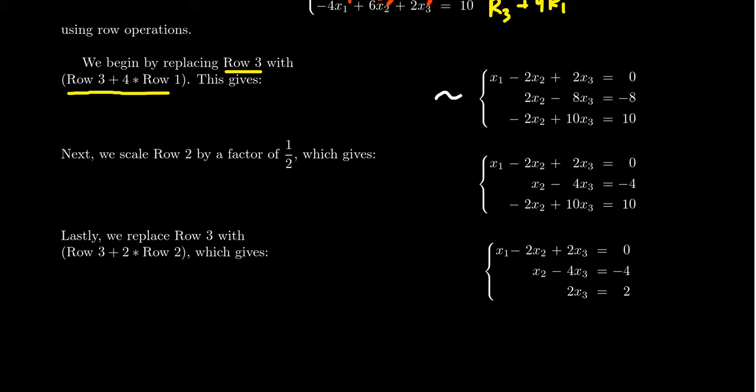Next, what we're going to do is we're going to take row 2, and we're going to multiply it by a factor of 1 half. We're using the scaling operation. So, I'm going to take row 2 and times it by 1 half. Oh, I need to do that above, don't I? We're going to multiply this one by 1 half.